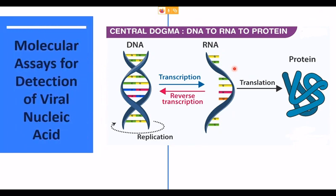Before discussing molecular assays, let us have a brief look at the central dogma of molecular biology. The central dogma states that DNA is transcribed to RNA and RNA is translated to protein. DNA is transcribed to messenger RNA — a process called transcription — and RNA is translated to protein, which we call translation. The enzyme involved in transcription is called transcriptase, also known as RNA polymerase.